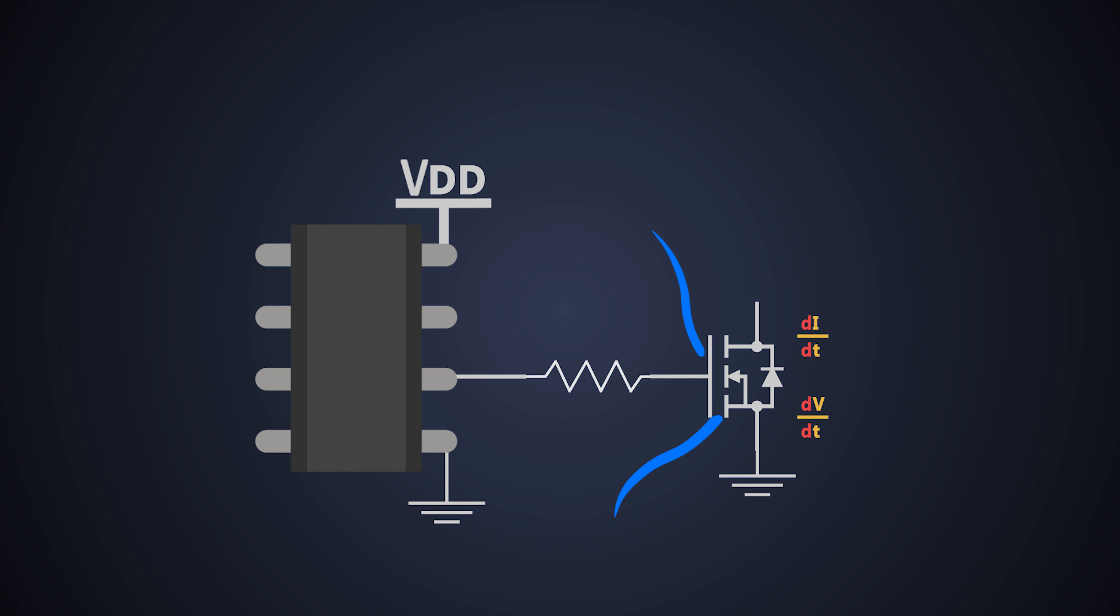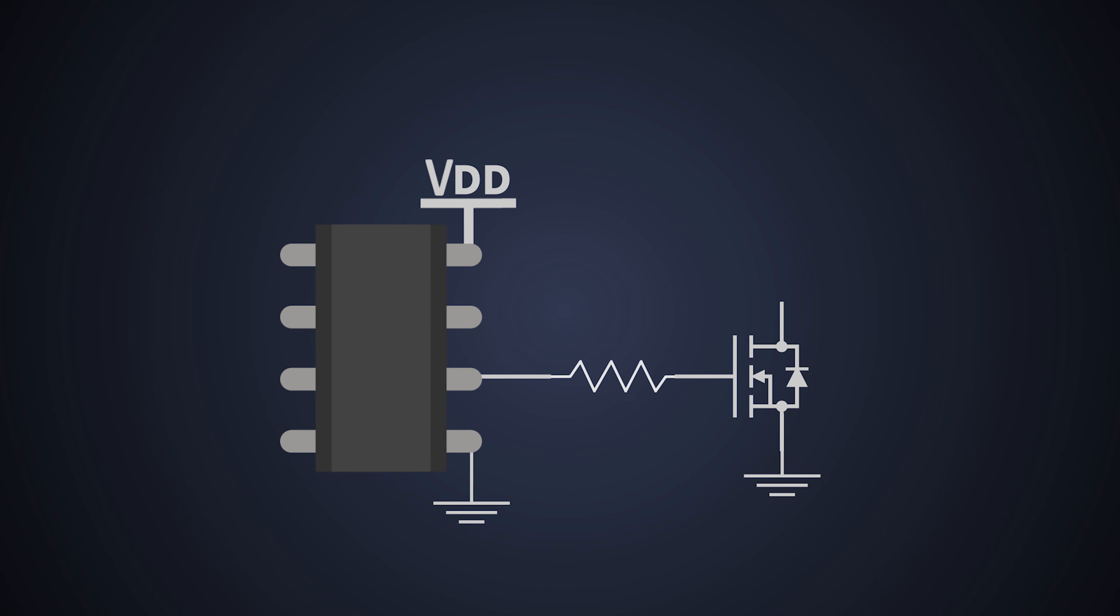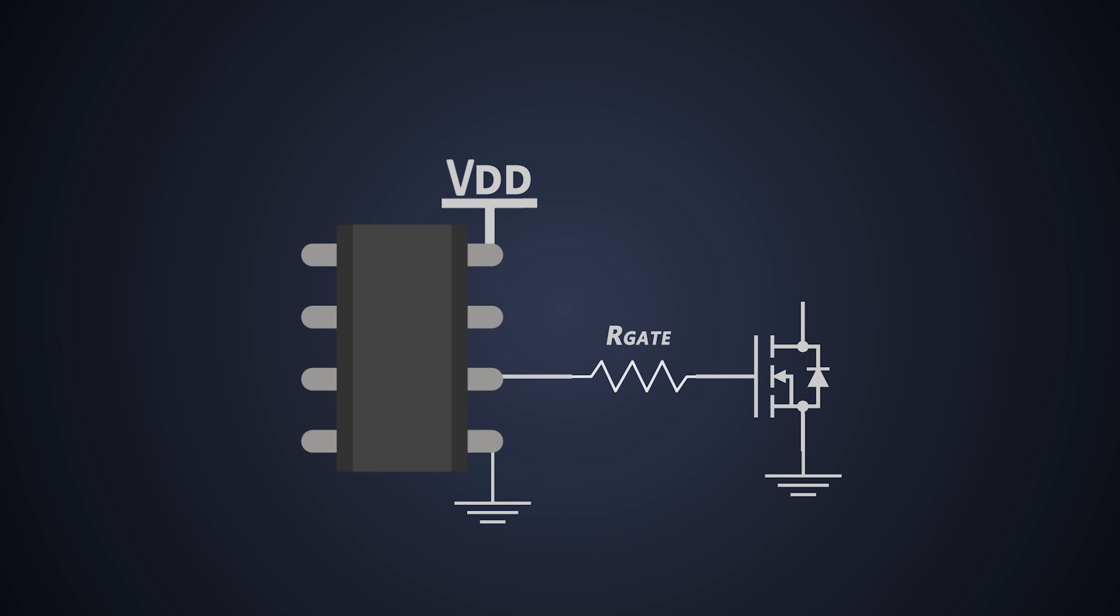Well, we'll focus on the techniques which increase the turn off speed of the n-channel MOSFET when it is used as a lower side switch.